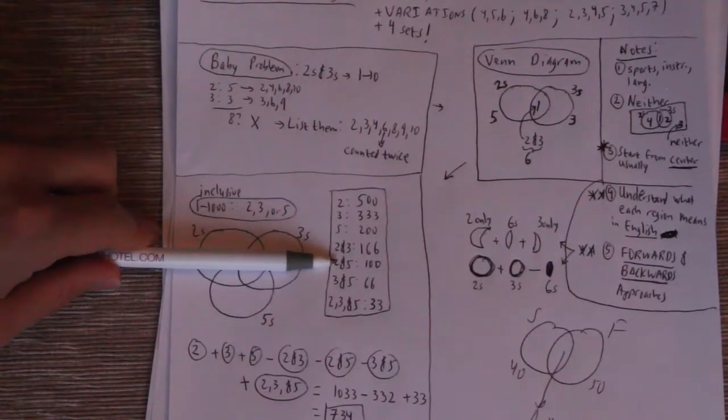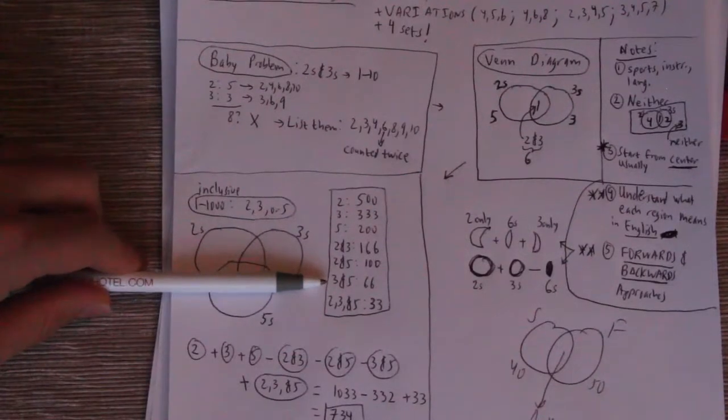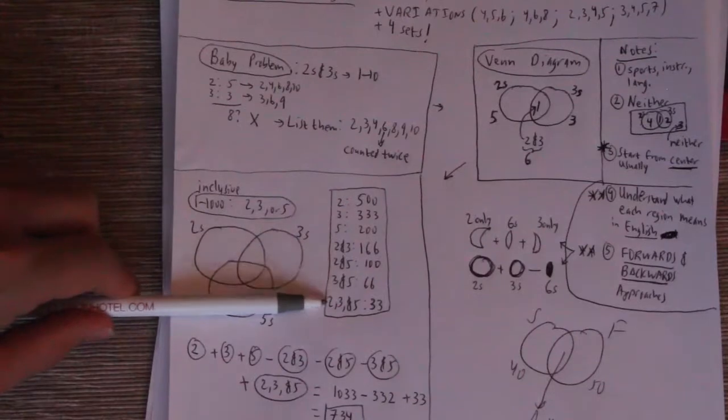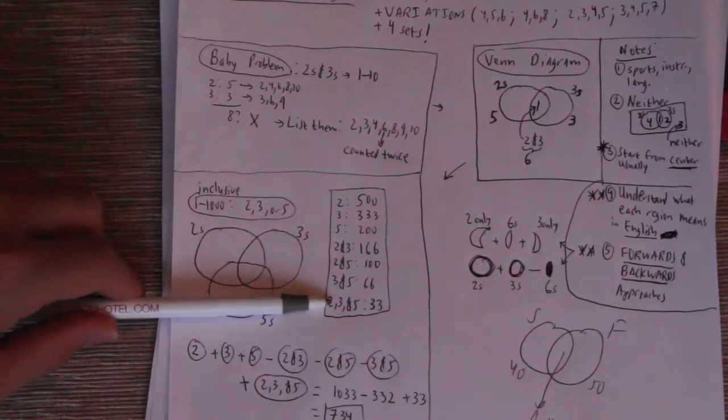Two and five, 1,000 divided by 10 is 100. 1,000 divided by 15 rounded down is 66. And 1,000 divided by 2 times 3 times 5, which is 30, would be 33.